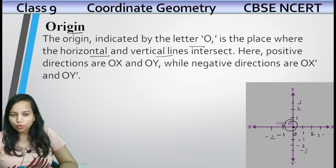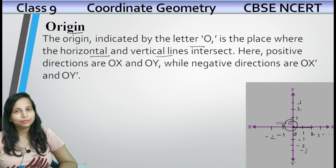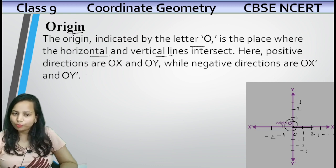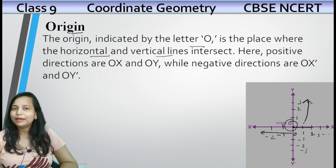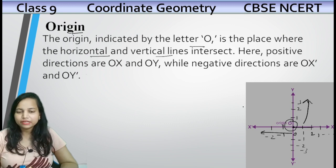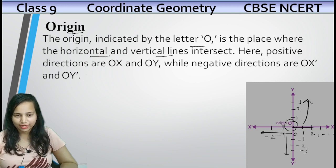This OX and OY — yeh positive directions hain. Dekho, yahan pe zero, one, two, three numbers kya hain — positive hote hain. Similarly, OY upar wali side bhi positive numbers hain. Now, OX dash — number line ke left side pe humare paas negative numbers aate hain, toh OX dash kya hai? Negative direction hai. Similarly, OY dash — yahan pe negative numbers likhe hain.